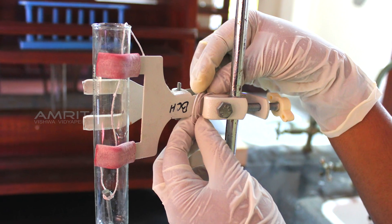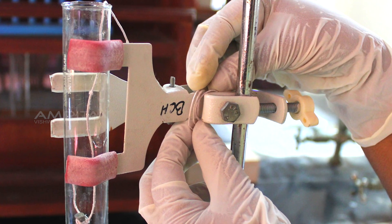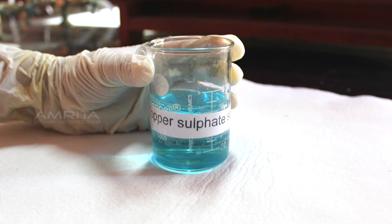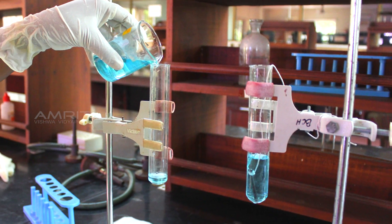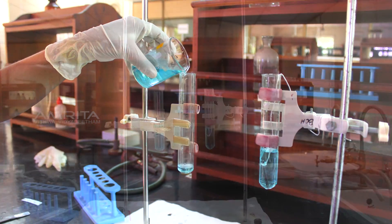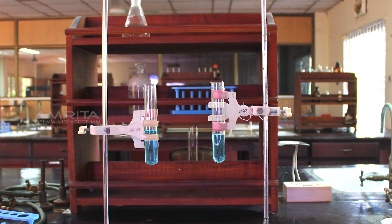Then tie the other end of the thread to the stand. Take copper sulphate solution in a beaker and pour some of it into both the boiling tubes. Keep the apparatus undisturbed for a day.